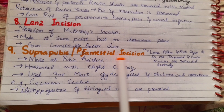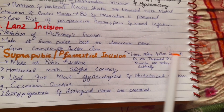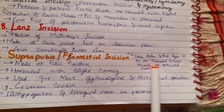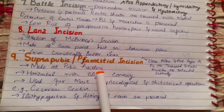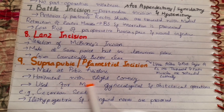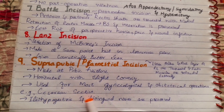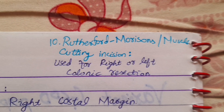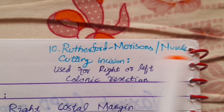At number nine we have the suprapubic or Pfannenstiel incision. In this type, the linea alba and anterior layer of the rectus sheath are transected and the rectus muscles are retracted laterally. It is made at the pubic hairline as a horizontal incision with a slight convexity. It is used for most gynecological and obstetrical operations, for example cesarean section, and the ilio-hypogastric and ilio-inguinal nerves are preserved.